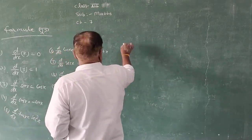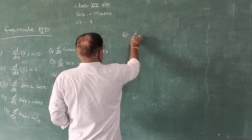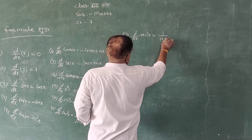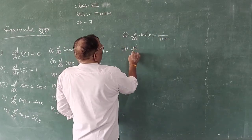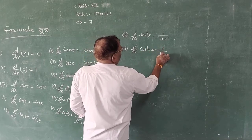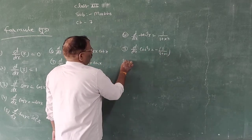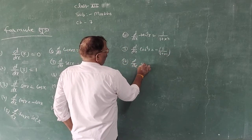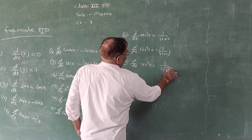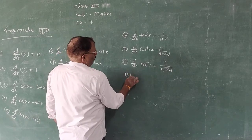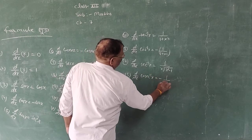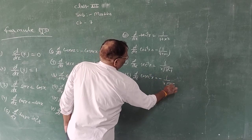Formula 12: Differentiation of tan inverse x = 1 upon (1 + x²). Formula 13: Differentiation of cot inverse x = minus 1 upon (1 + x²). Formula 14: Differentiation of sec inverse x = 1 upon x · under root (x² − 1). Formula 15: Differentiation of cosec inverse x = minus 1 upon x · under root (x² − 1).